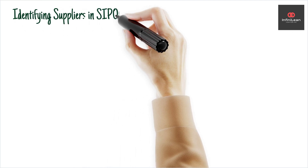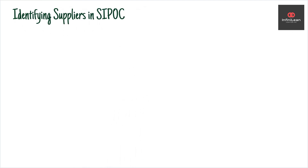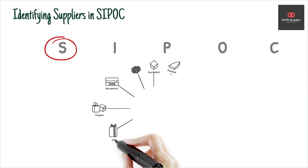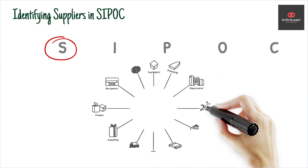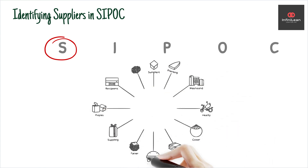Now, let's identify the suppliers of our process. Suppliers are entities or people who provide inputs to the process. For example, suppliers might provide raw materials that are pivotal to the production line in a manufacturing setting. Identifying the right suppliers is crucial, as they can influence the quality and cost of the final output.